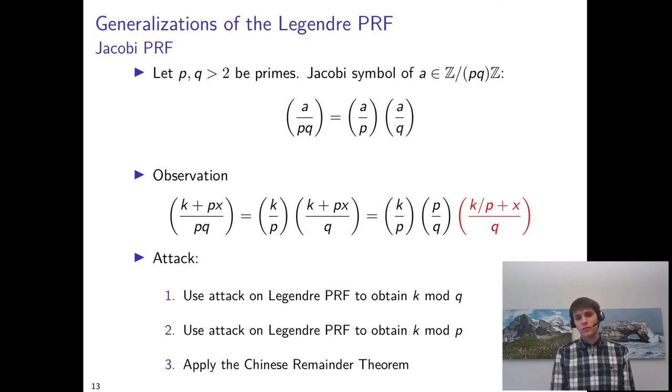And then we can do the same thing with p and q swapped to obtain the value of the key k modulo p. Finally, we simply apply the Chinese remainder theorem in order to obtain k mod p times q.